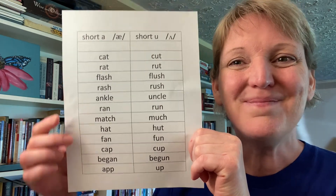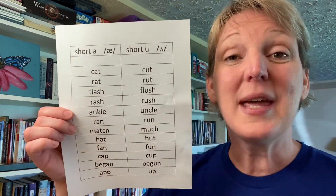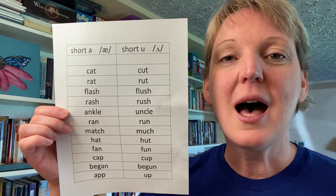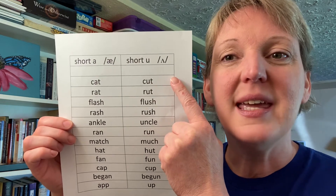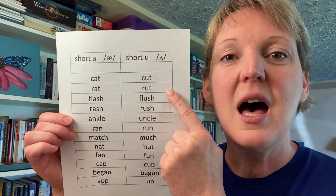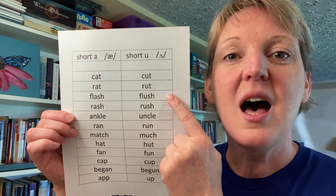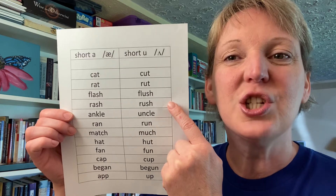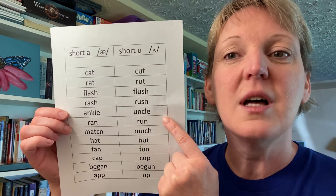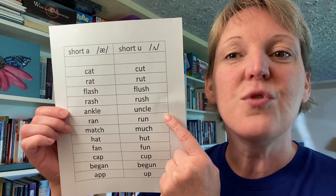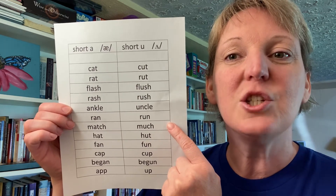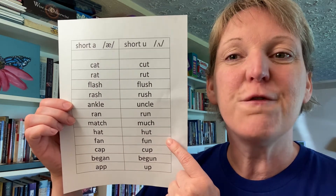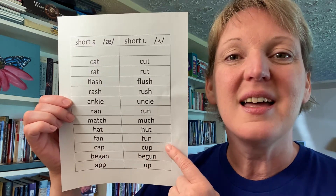On the other side we have the short U sound, which again sounds like /ʌ/. So we have: cut, rut, flush, rush, uncle, run, much, hut, fun, cup, begun, and up.